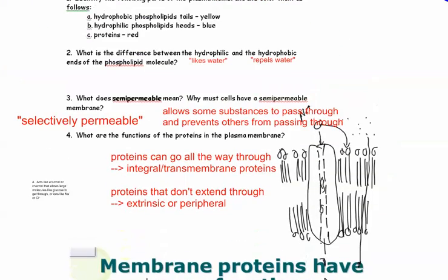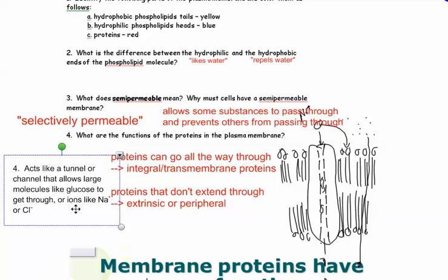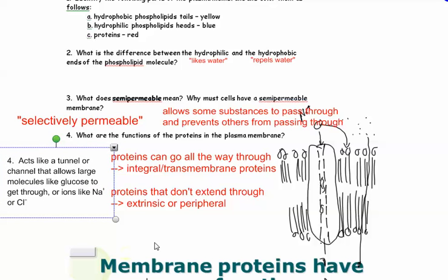So here are the names again. Integral, transmembrane. I also said intrinsic as well. And then proteins that don't extend through are extrinsic or peripheral. They basically act like a tunnel that allow large molecules like glucose to get through or some ions. And more about that will be coming up later.